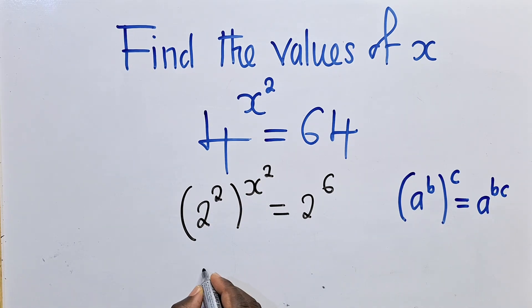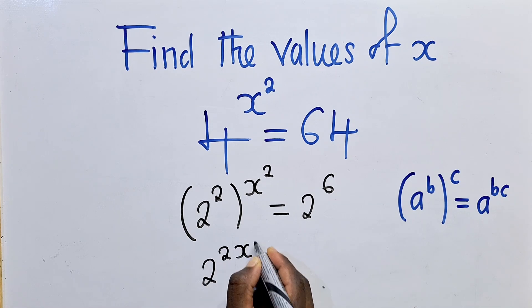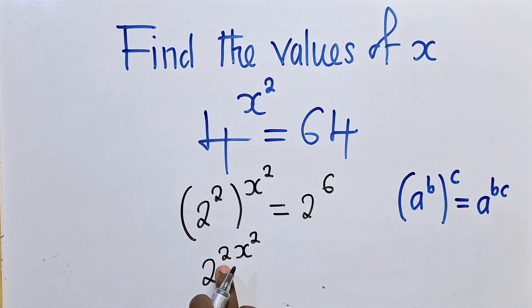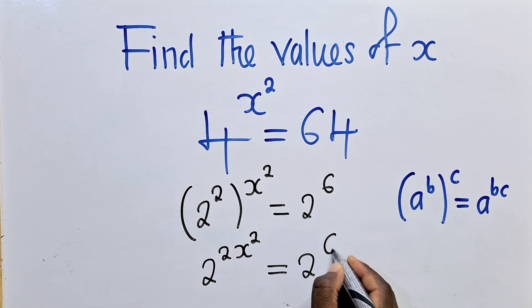We shall say 2 power 2x power 2. When you multiply 2 times x squared, it's 2x squared as a power, which is equal to 2 power 6.